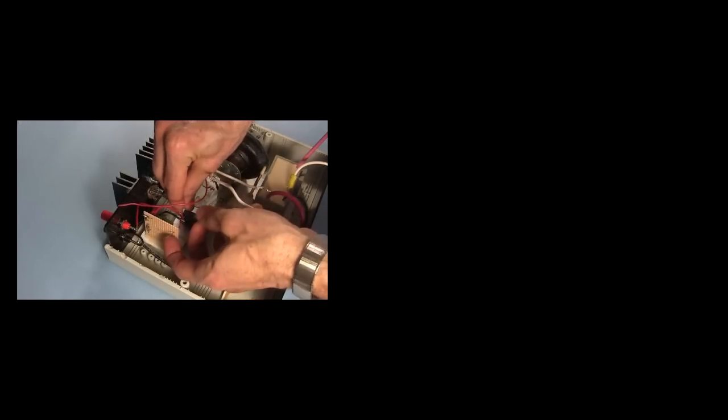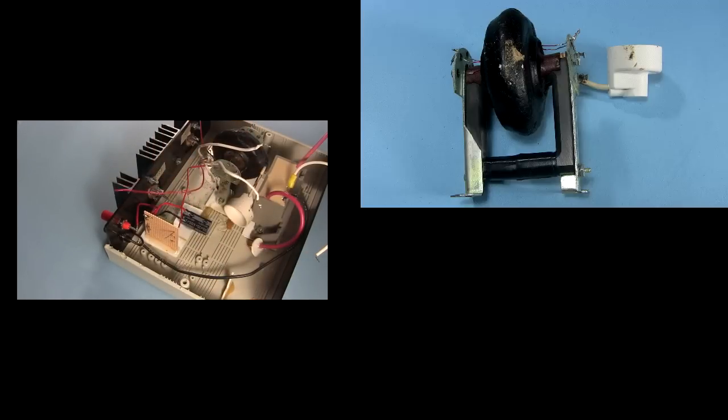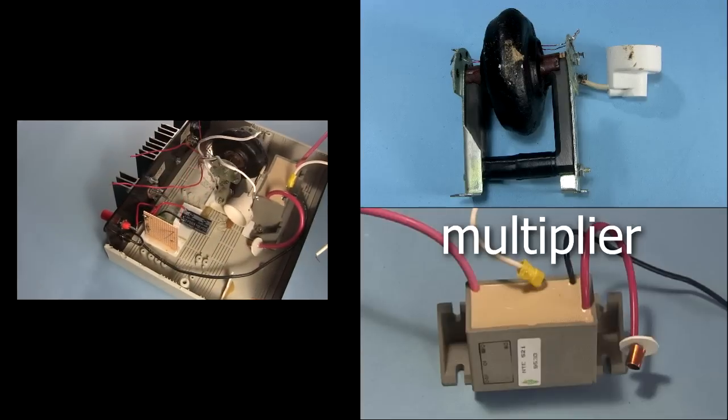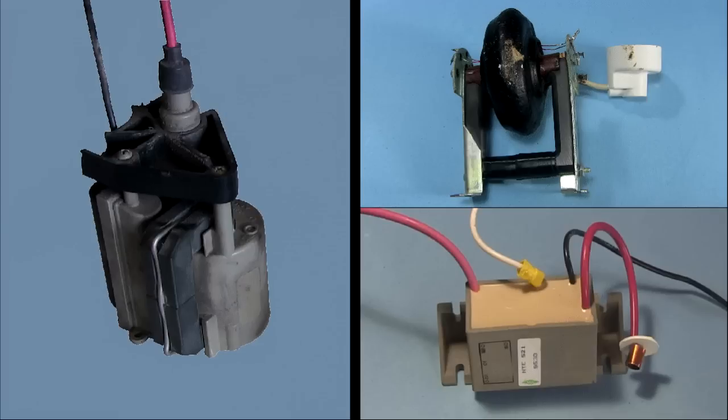In a video where I showed how to make a 30 kilovolt high voltage power supply, I used this flyback transformer with this multiplier. Notice the difference, this flyback has just a rectangular core and a coil wrapped around it. These are hard to find.